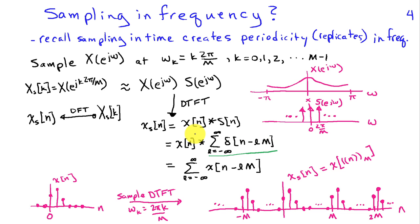Well, the convolution of x of n with an impulse train is particularly easy. Each of these impulses takes the original signal and shifts it to some multiple of M. So the time domain signal x_s of n corresponding to the DFT x_s of k, which is derived from sampling the DTFT, has this form. I've got l equals 0 term, which would be x of n, the original signal, plus shifted replicates of this.